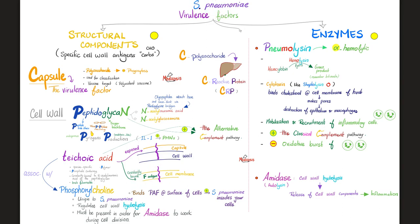Something unique for strep pneumo is phosphorylcholine. It regulates cell wall hydrolysis and must be present for the autolytic enzyme — the autolysin (amidase) — to work. Moreover, this phosphorylcholine binds platelet-activating factor, which is present not just on platelets but also on the surface of cells, making it easier for strep pneumo to invade your own cells. This is one of the reasons it can enter into your central nervous system, causing meningitis.